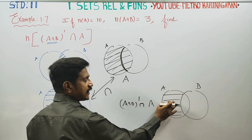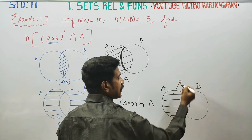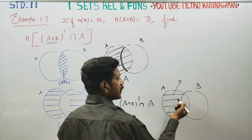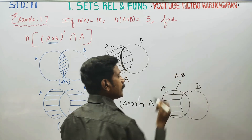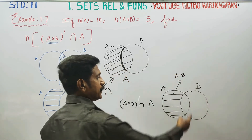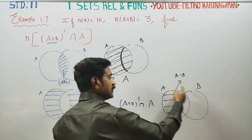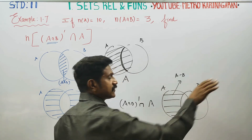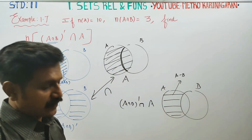The result is A intersection — A intersection is a whole complement. Intersection is an area. What is the name? This is A-B. Here is A-B in this region.